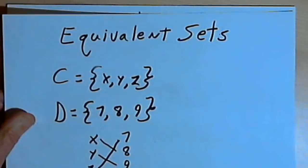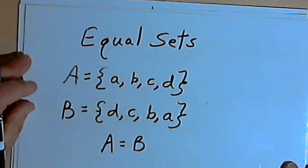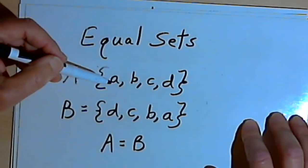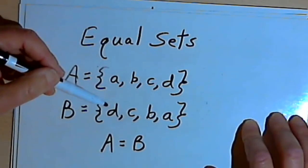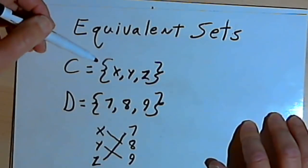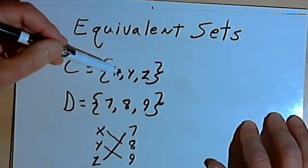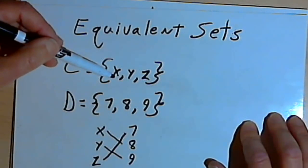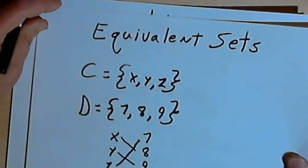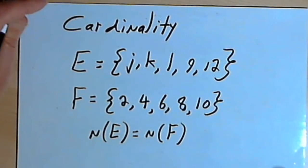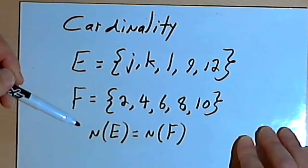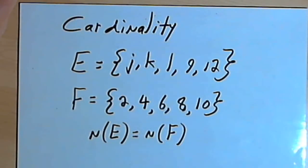So just to review: we dealt with equal sets — equal sets are sets that have exactly the same elements, perhaps in a different order, but two sets with exactly the same elements are equal sets, and we write set A equals set B. Then we've got equivalent sets — equivalent sets are sets with the same number of elements but the elements are different. When we talk about them, we can say they have a one-to-one correspondence to each other. And when we talk about the number of elements they have, we call that their cardinality. We can say those two sets have the same cardinality, they're equivalent sets, or the sets have a one-to-one correspondence. Okay, so that's about it. Take care, I'll see you next time.